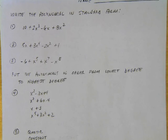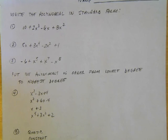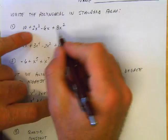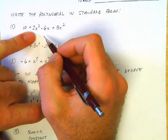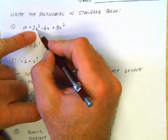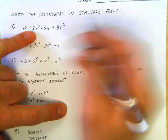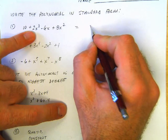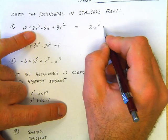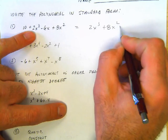All right, here we go. The first three say write the polynomial in standard form. So standard form means you're going to have the variables with the largest exponents first.